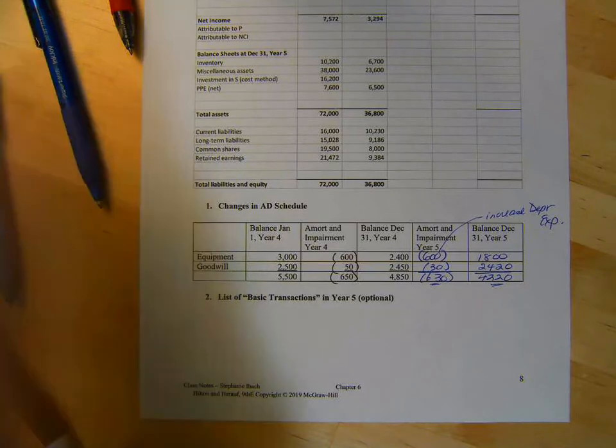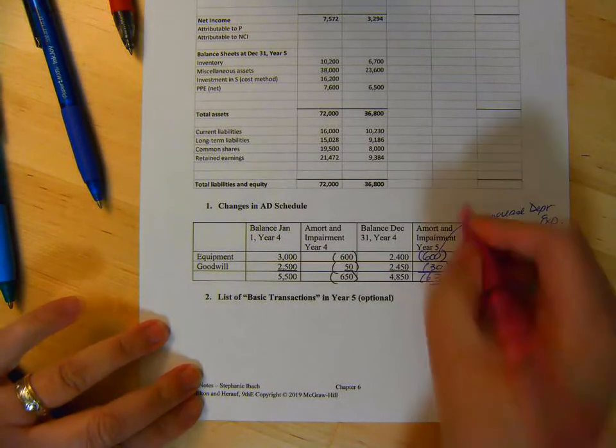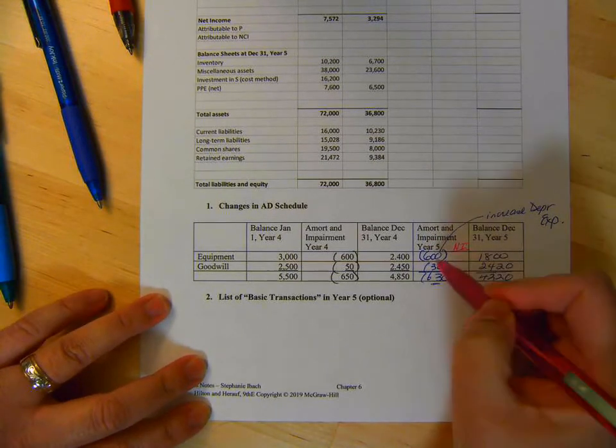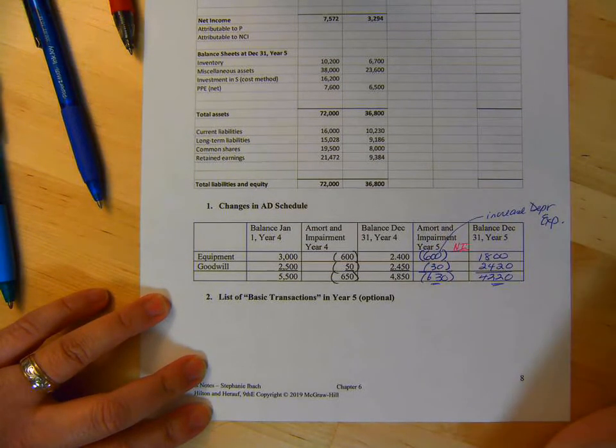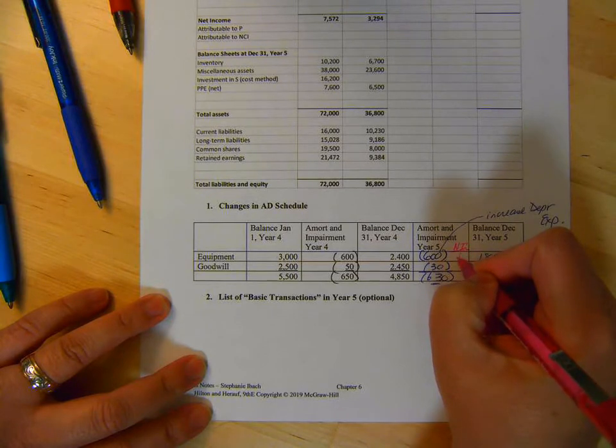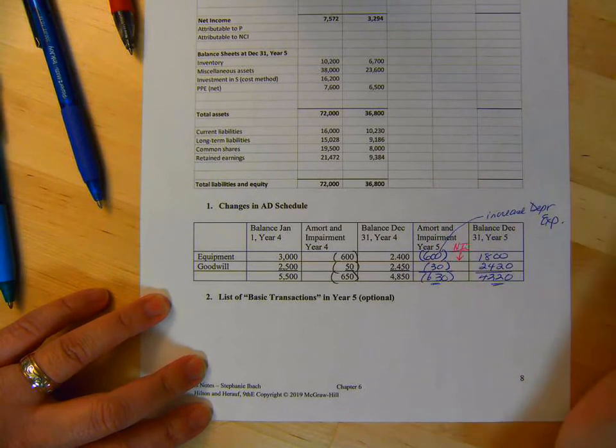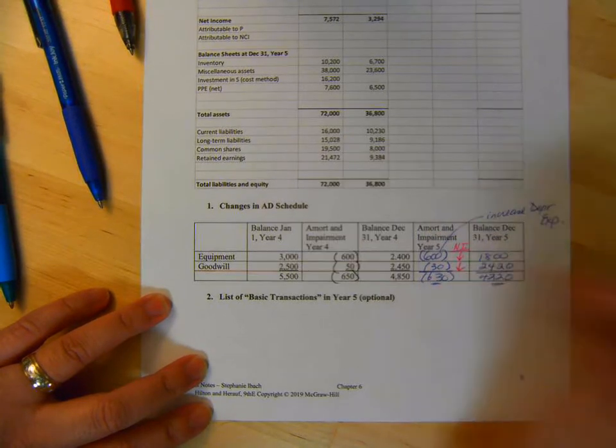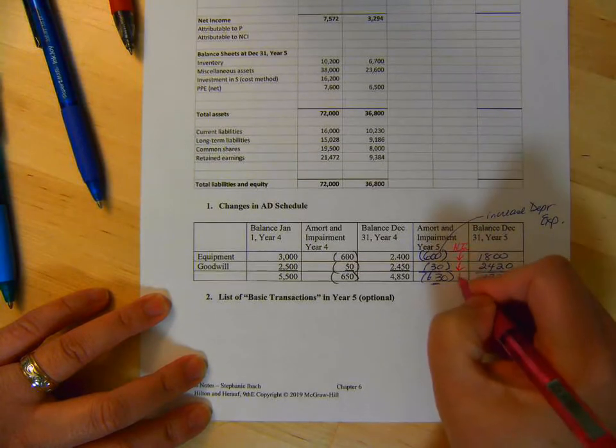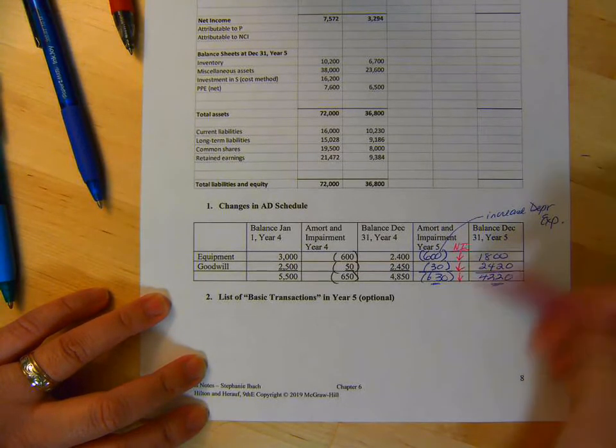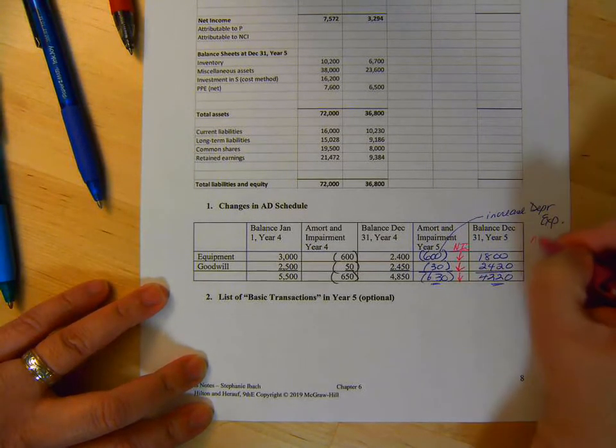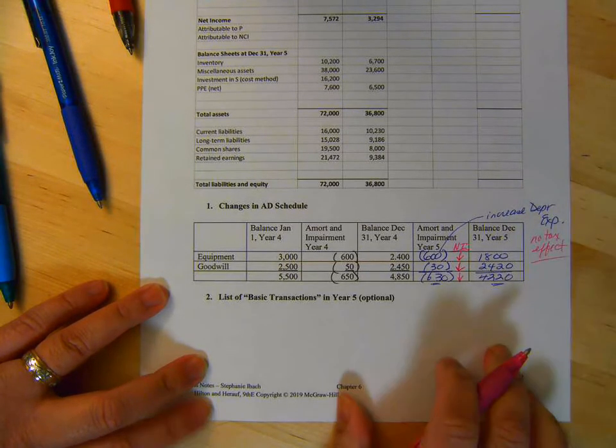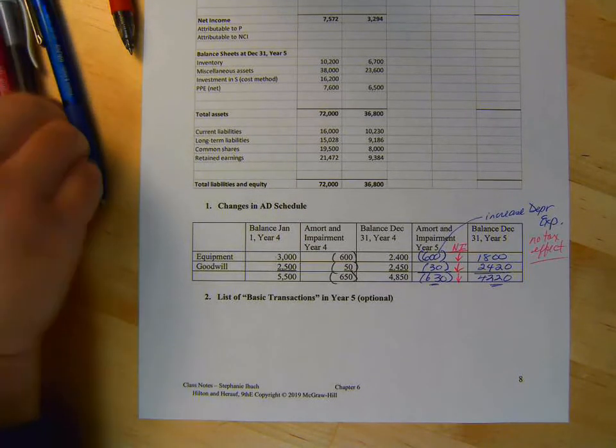Now the one thing I do want to stress is which way is net income going if we're increasing depreciation expense? It's going down. More expense, smaller net income. Goodwill impairment makes net income go down. And again, so for the total it'll all go down. We assume no tax effect on these. So that's our changes in AD schedule.